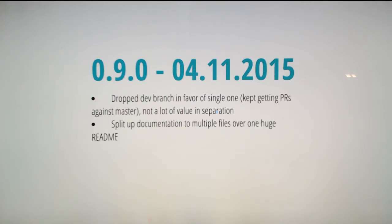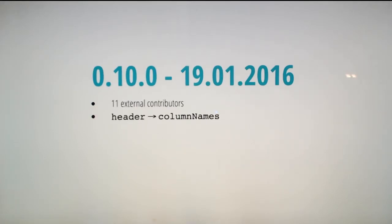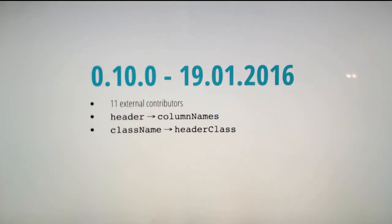Version 0.90: I simplified my development flow so it's easier to get contributions. I'm now in a single master model with feature branches. I had this huge readme and when a user shows up it's really boring to walk through all of that, so I split it up and started working on documentation a bit more. Version 0.10: more people showed up and some naming changes happened because old names weren't that great.